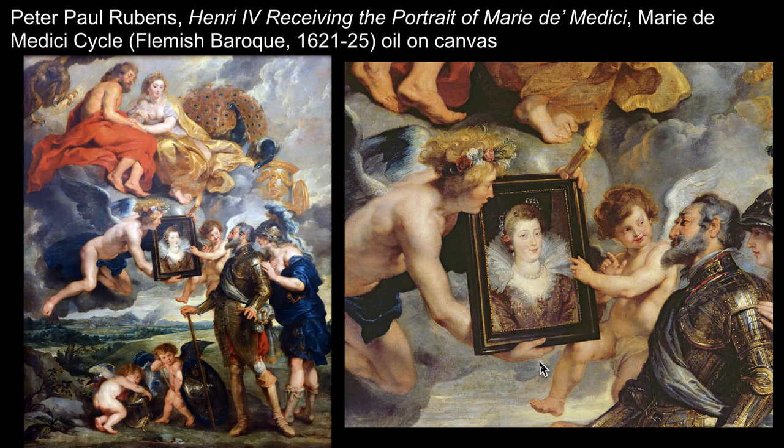Rubens tries to bring peace to Europe using art, supporting the Catholic Church and monarchy. He blends his origins as a northern artist with his knowledge of Italian and classical precedents, creating bold, bright, celebratory, and smart images.